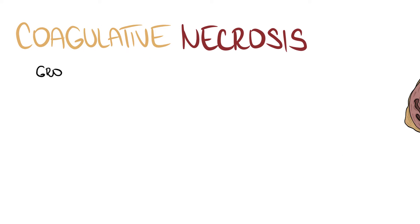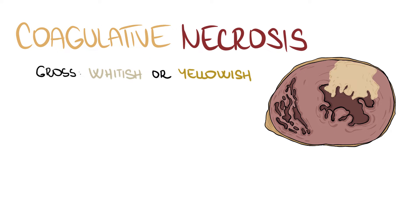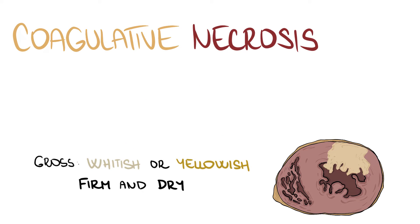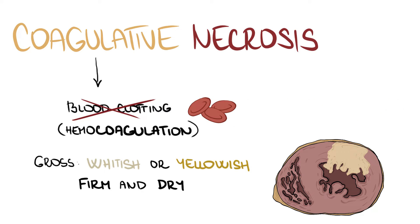Grossly, coagulative necrosis is whitish or yellowish, firm and dry. Please keep in mind that the term 'coagulative' is by no means related to blood clotting, which is also called hemocoagulation. It is simply an old and somewhat inaccurate macroscopic description of the necrotic tissue that looks condensed.